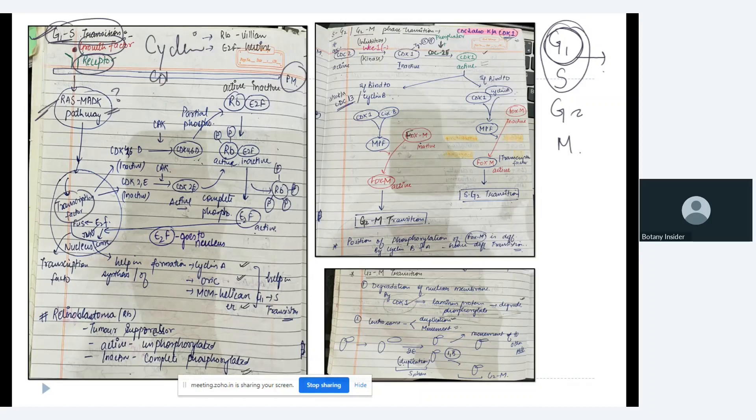If you all remember yesterday we discussed about that in every transition we require some specific cyclin and CDKs. So in case of G1 to S transition we require first the CDK4/6 and the cyclin D. And in addition we also require the other one that is CDK2 and cyclin E. We discussed this yesterday. Now these two cyclins, both of these pairs they work together.